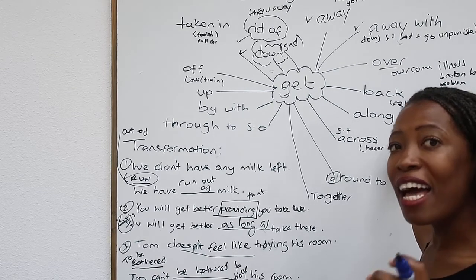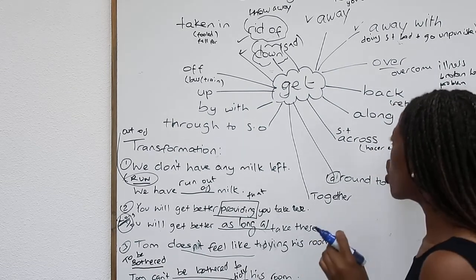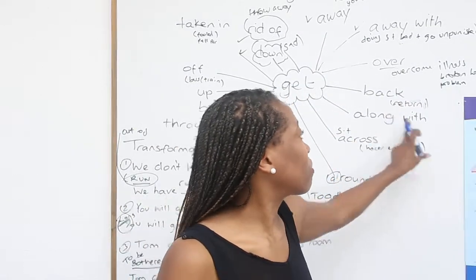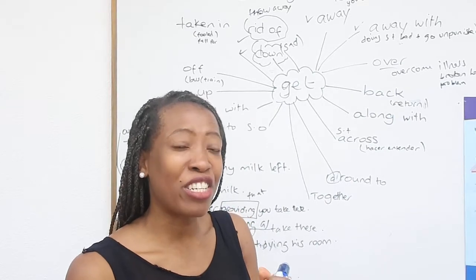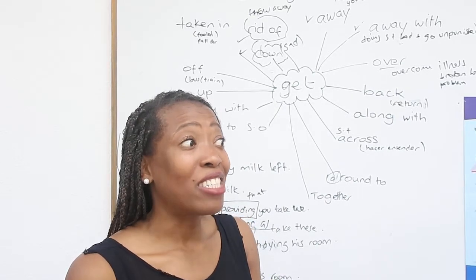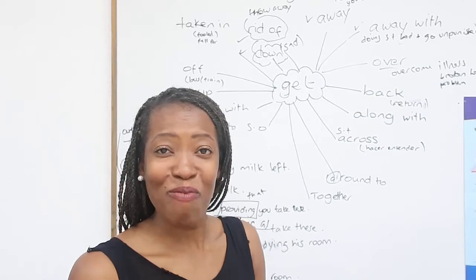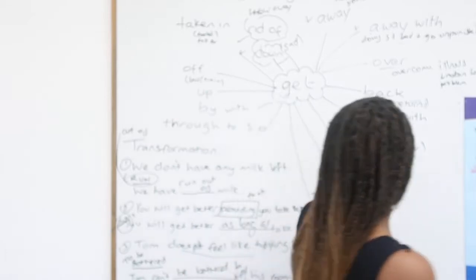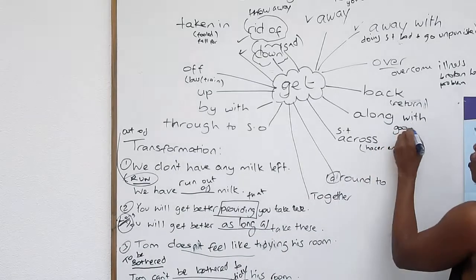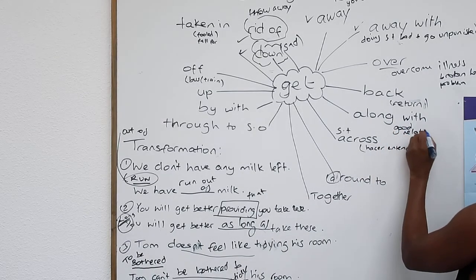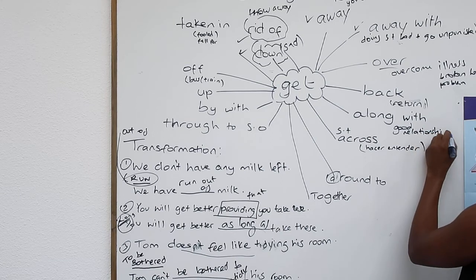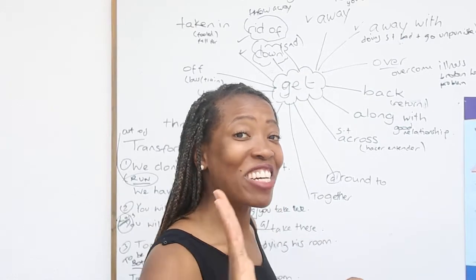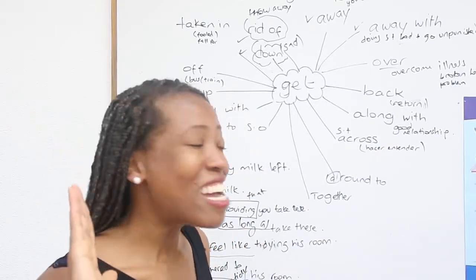Now this one you might have seen and it means the same as get on with. Get along with someone. To get along means that you have a friendly relationship with someone and you don't dislike them. You like them. You get along with someone to have a good relationship with someone. Or maybe you don't get along with someone. Remember you can always use these in negative.